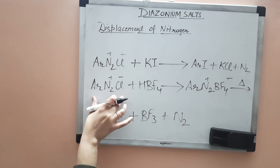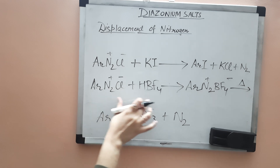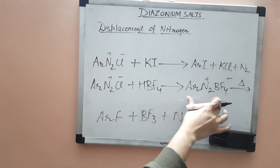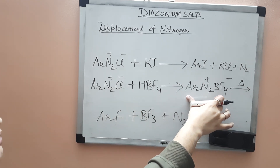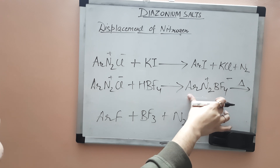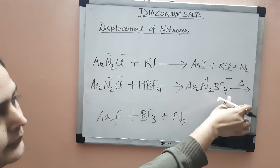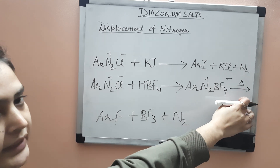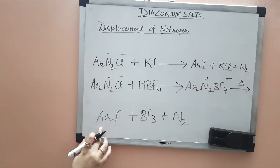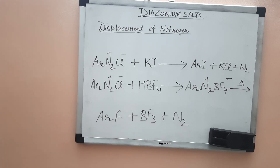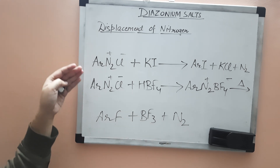So the steps are: first take your diazonium salt, add fluoroboric acid, and you get the precipitate of aryl diazonium borofluorate. Then you heat it and it decomposes to your aryl fluoride, BF3, and N2. Those were the two reactions for introducing fluoride.